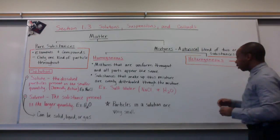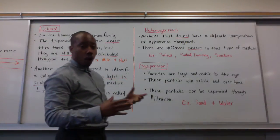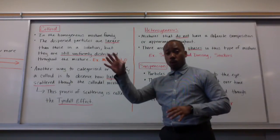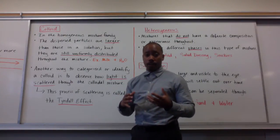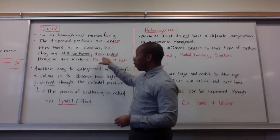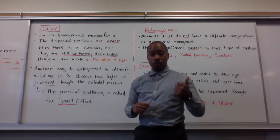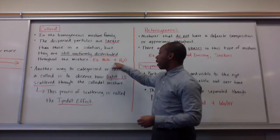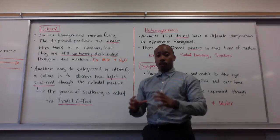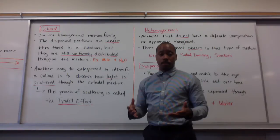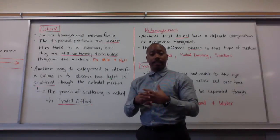Another type of homogeneous mixture is called a colloid. A colloid falls within the homogeneous mixture family, but there are some differences between a colloid and a solution. The particles are dispersed and they are larger than those in a solution, but they're still uniformly distributed throughout the mixture, keeping it within the homogeneous mixture family. An example of a colloid is milk and water — the milk molecules are suspended within the solvent, but those particles are much larger, giving them a different characteristic than a solution.